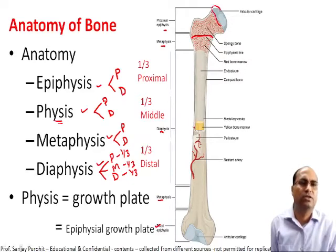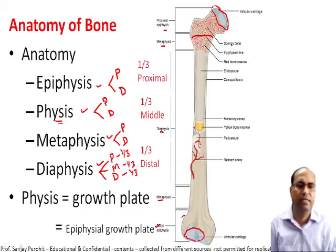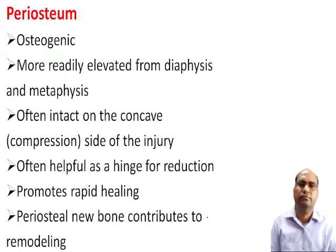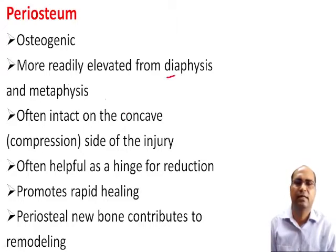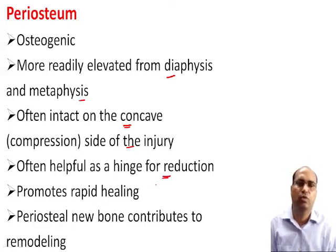The articular ends are known as articular cartilage, and these are the condyles. Regarding the periosteum osteogenic layer, it is more readily elevated from the diaphysis and metaphysis, often intact on the concave side of the injury. It is often helpful as a hinge for reduction and promotes rapid healing. The periosteum in newborns contributes to remodeling.